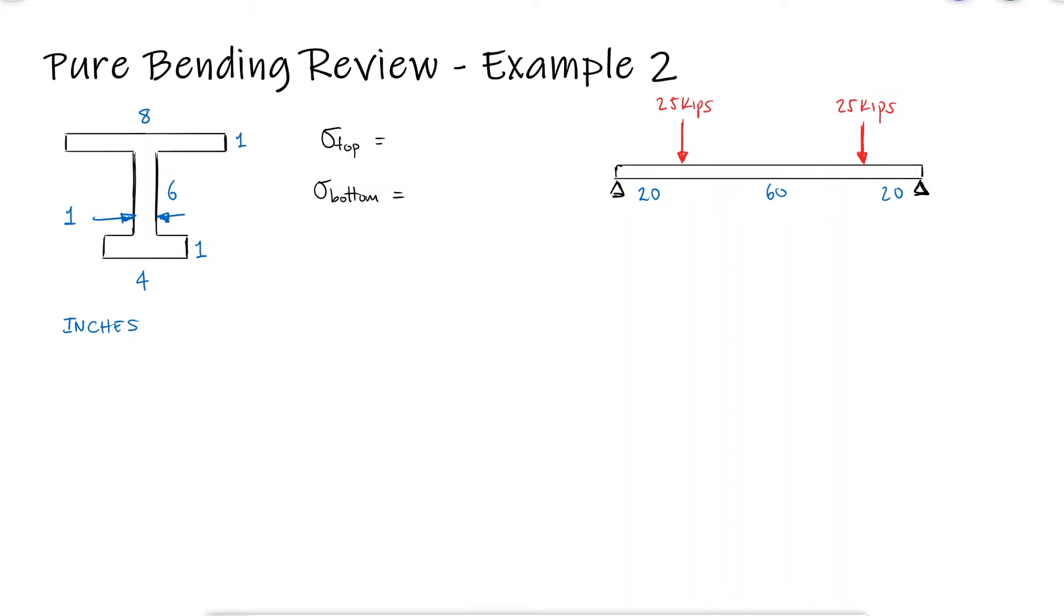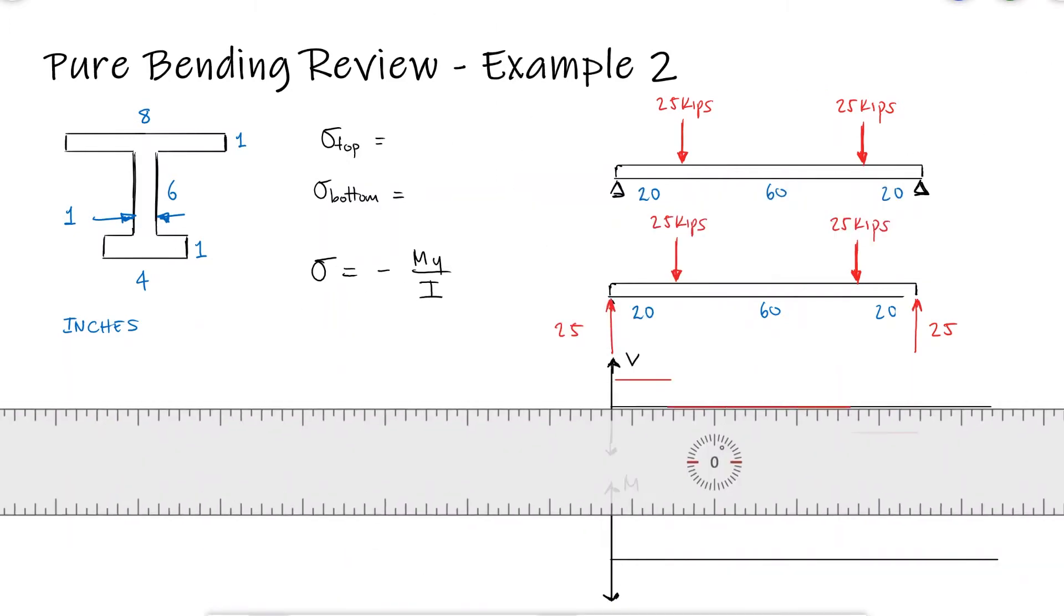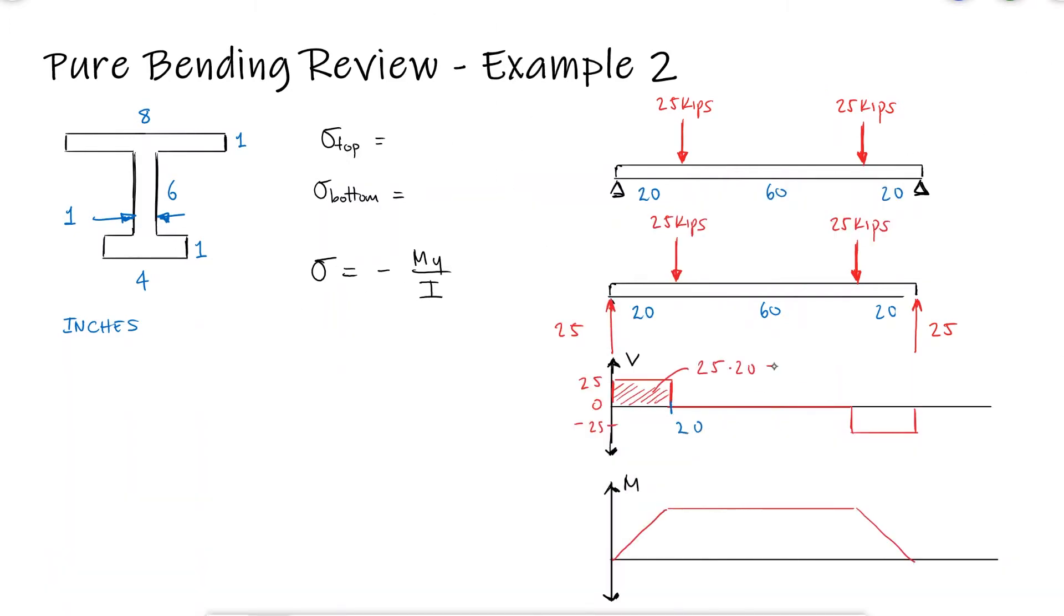Just like we did in the video for example 1, we'll need to find the centroid for y and i and a bending diagram to find the maximum moment. With the free body and shear diagrams, we find in the moment diagram that the maximum moment is 500 kip inches.